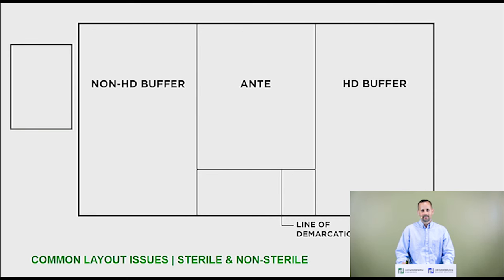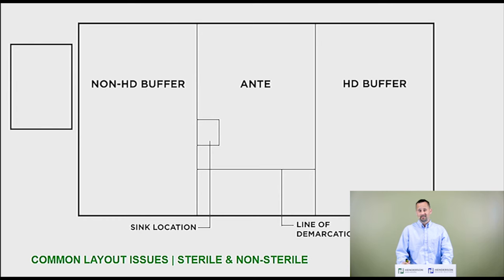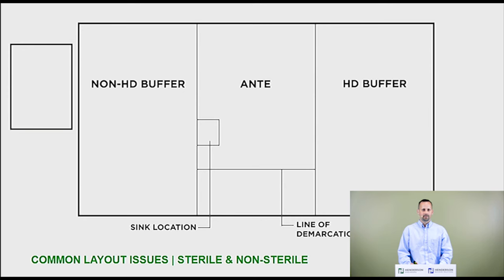Once they go to the other side of the line of demarcation, that's where they finish putting their headgear on, face mask, jacket, and then wash their hands. One big mistake we've seen in a lot of existing facilities is that because of the shape of the room, they have the sink on the wrong side of the line of demarcation, so there's no way they can actually garb and wash in the way USP 797 requires. We want to make sure the sink is in an appropriate location, but these rooms can sometimes be a weird shape, so it takes a few iterations to figure out how to get everything to work properly.